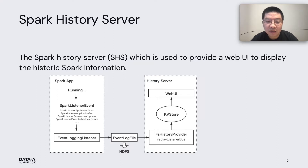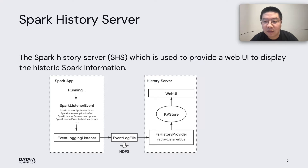In general, all event log files created by multiple applications in a cluster are stored in the same root path. The Spark history server builds the web UI by reading the event log files and replaying them in memory. However, replaying event log files contains four defects.